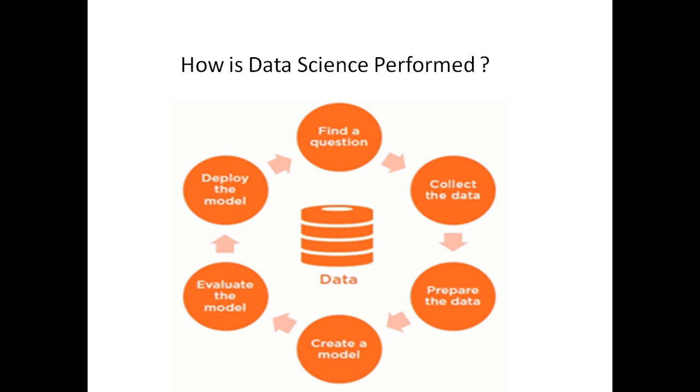Finally, if everything looks good, we deploy our model. This could mean communicating the results of our analysis to others, making a decision and acting upon our decision, or deploying an application into production. We then repeat the process for each question we would like to answer, using feedback from our previous results to guide our process.